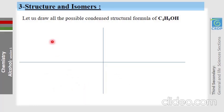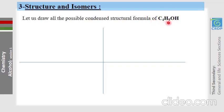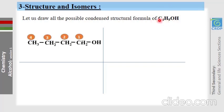This section is about structures and isomers of alcohols. Let us draw the condensed structural formulas of alcohols having the molecular formula C4H9OH. For four carbon atoms, first draw the structure with a linear chain and place OH on carbon number 1. You get 1-butanol.